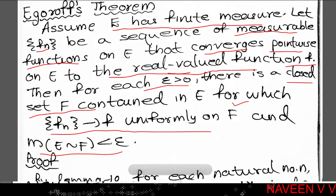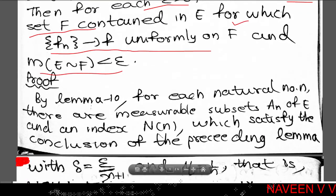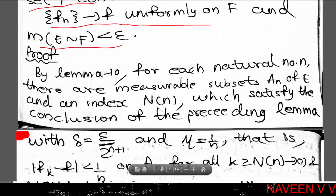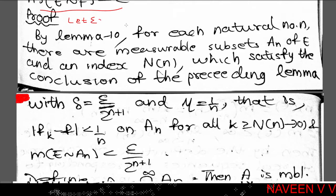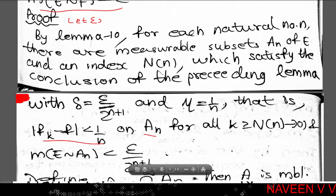Choose any positive real number epsilon. For each natural number n, let delta equal epsilon divided by 2 raised to n plus 1, and eta equal 1 by n. By the previous lemma, we get a measurable subset An of E and an index capital N(n) which satisfies: modulus of fk minus f less than 1 by n on An, for all k greater than or equal to capital N(n), and measure of E minus An less than epsilon by 2 raised to n plus 1.